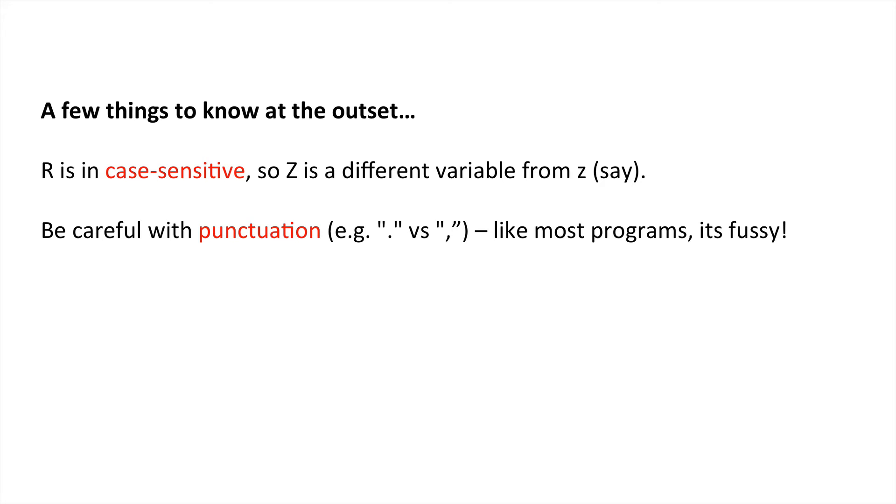A few things you should know about R at the outset. R is case sensitive, so Z is a different variable from z. You should also be very careful with punctuation. Full stop, for example, is different from a comma, and the different forms of inverted quotes are also different from one another. Like most programs, it's fussy.